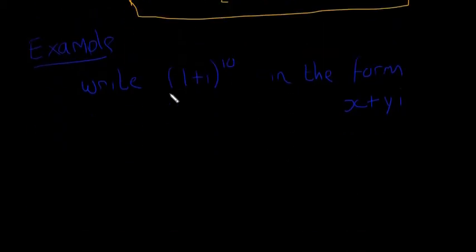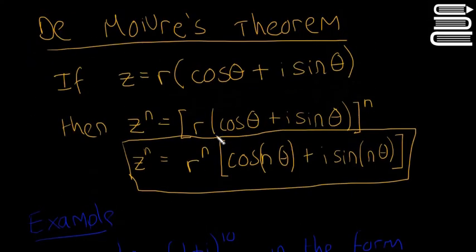It's asking us to write 1 plus i to the power of 10 in the form of x plus yi. So if we were to write this whole, if we were to multiply this out 10 times, it'd just take us absolutely forever. It'd be really monotonous and it wouldn't be really enjoyable. But if we just change it to the polar form, we can do this quite quickly using De Moivre's Theorem.